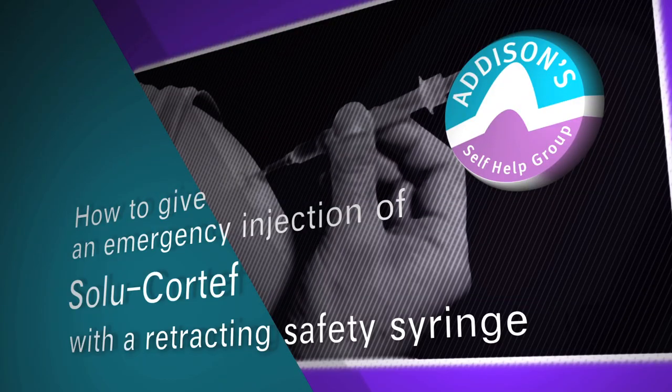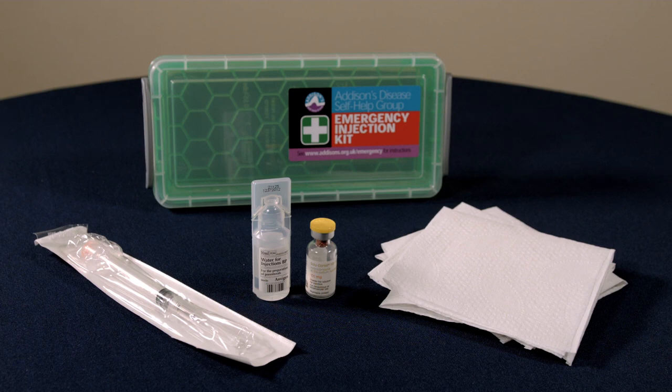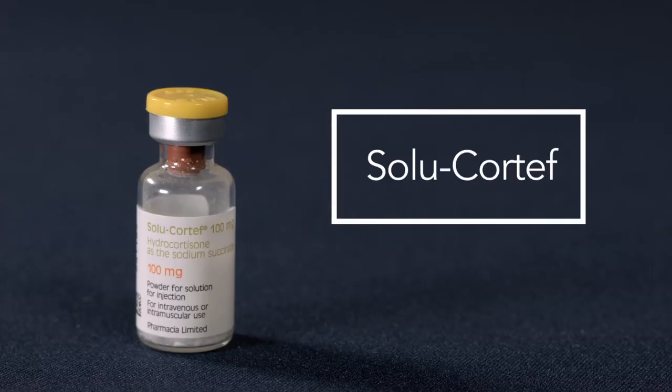This video explains how to give an emergency injection of Solucortef with a safety syringe. You will need a bottle of Solucortef, which is hydrocortisone powder for injection. The bottle contains 100mg hydrocortisone sodium succinate.